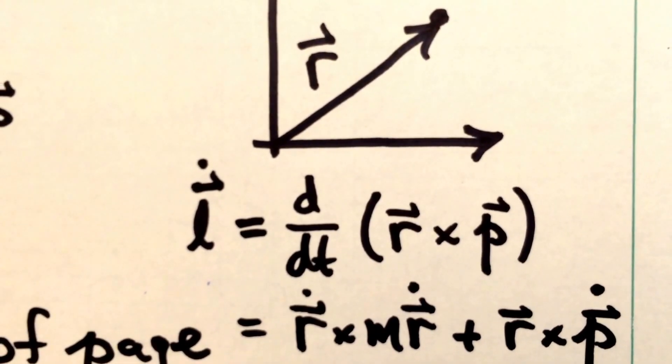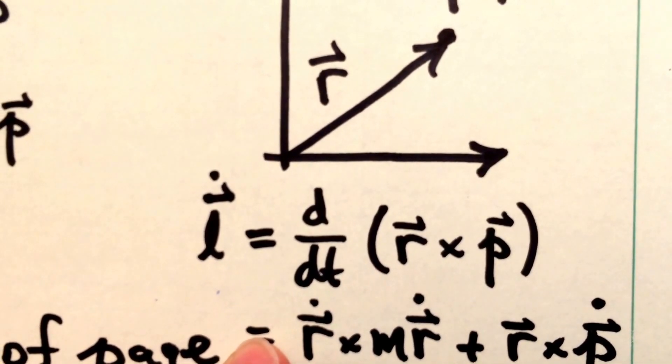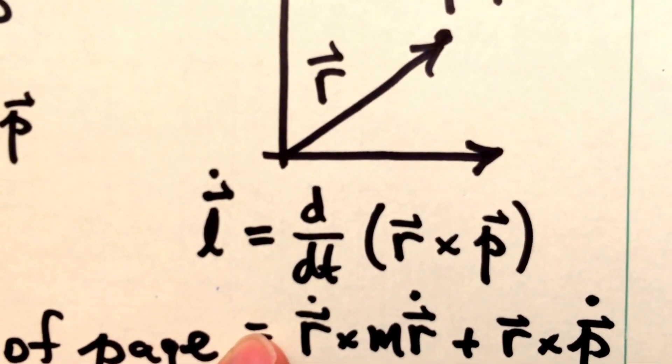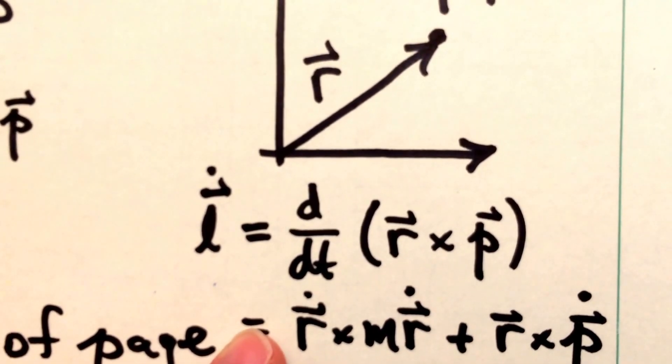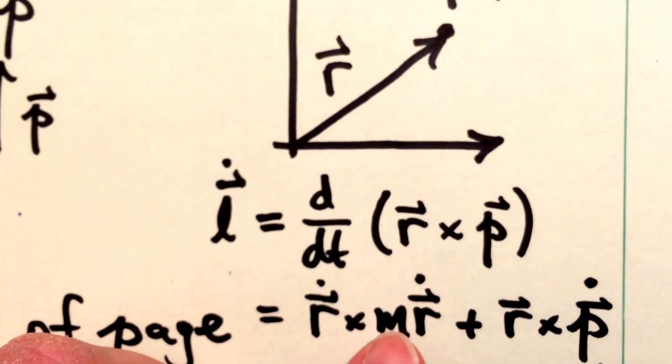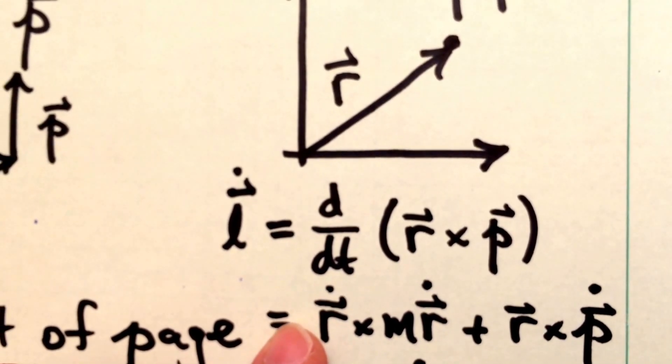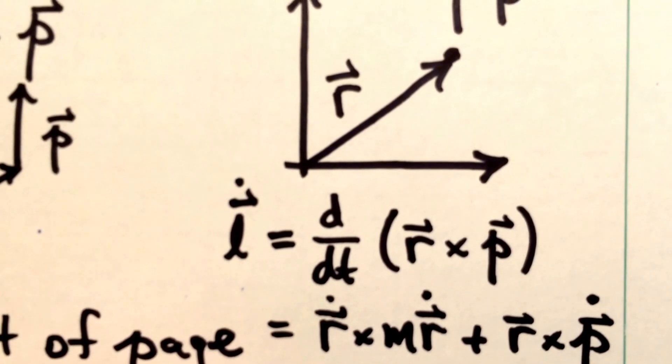So the first term we get is going to be r dot crossed into p. And remember that p is m times r dot. And so the first term here, r dot crossed into something which is a scalar times r dot, that's going to come out to be zero, because that's a cross product of a vector with another vector parallel to itself.